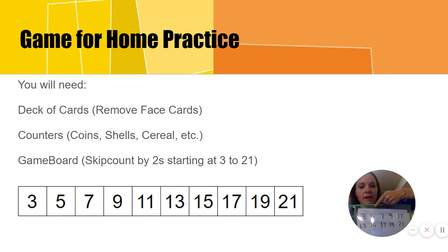And you'll need to create a game board by skip counting by twos, starting with the number three. So you're going to say three, five, seven, nine, eleven, thirteen, fifteen, seventeen, nineteen, and twenty-one.